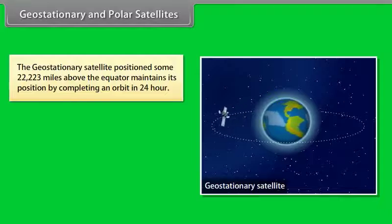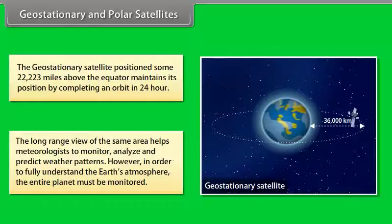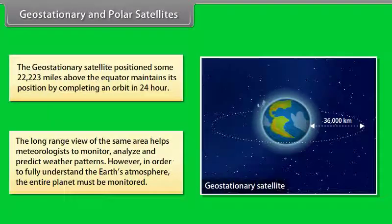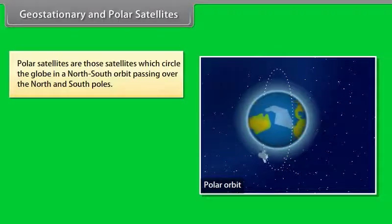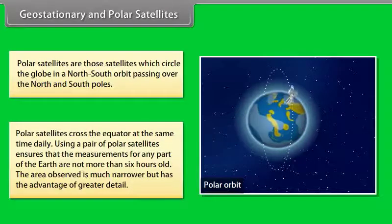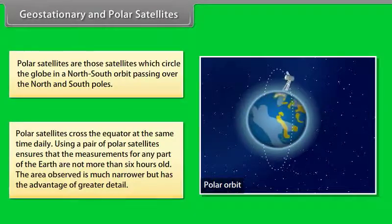Geostationary and polar satellites. The geostationary satellite, positioned some 22,223 miles above the equator, maintains its position by completing an orbit in 24 hours. It helps meteorologists to monitor, analyze, and predict weather patterns. Polar satellites circle the globe in a north-south orbit, passing over the north and south poles, and cross the equator at the same time daily. Using a pair of polar satellites ensures that measurements for any part of the earth are not more than six hours old, with the advantage of greater detail.